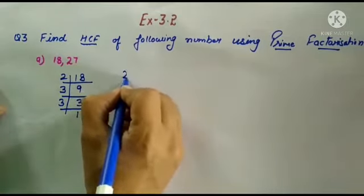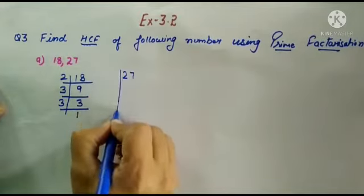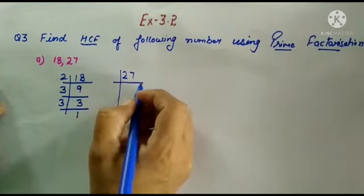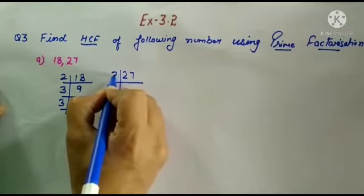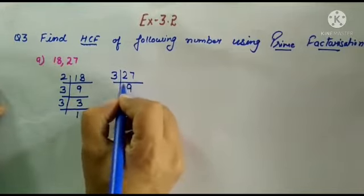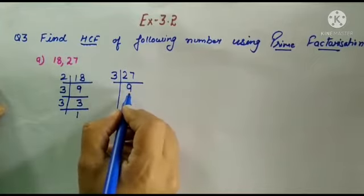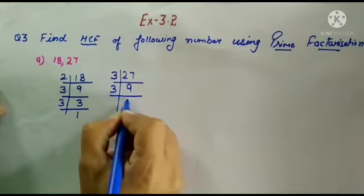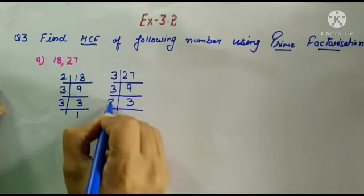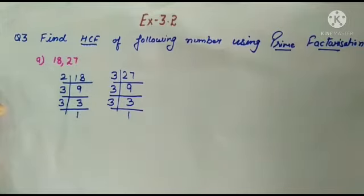Now we have 27. Now 27, 2 table - no. 3 table, yes. So 3 table, 3 times 9 is 27. Now 9, 3 table, 3 times 3 is 9. Then 3 times 1.